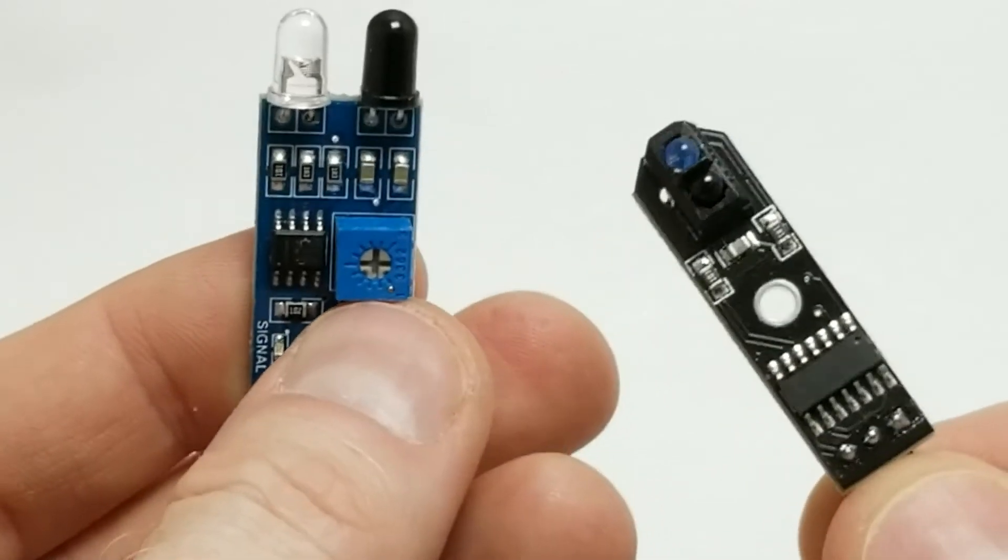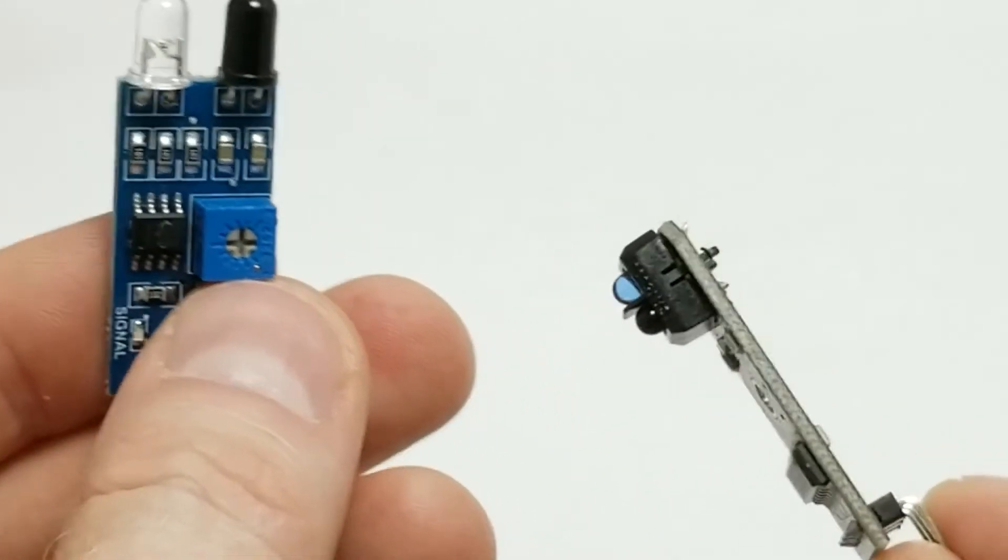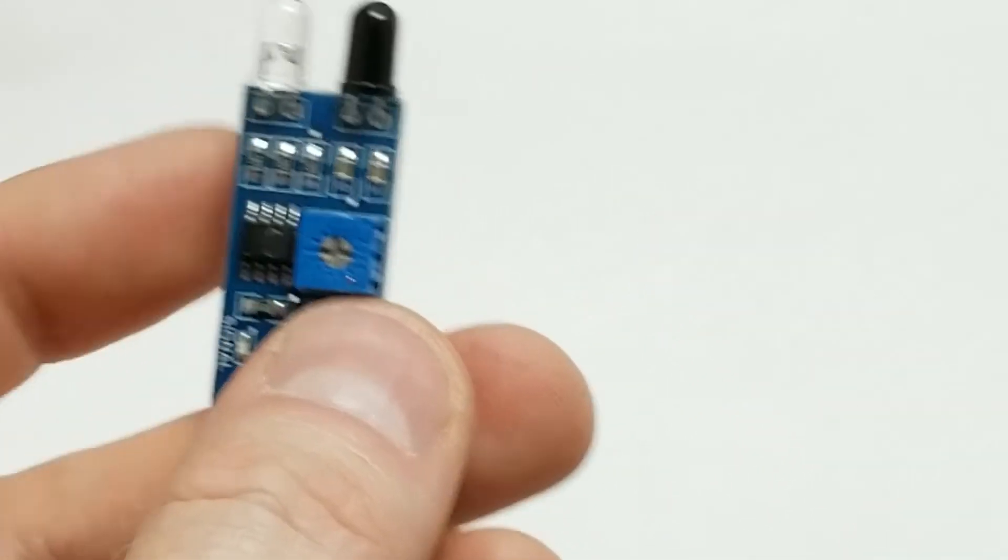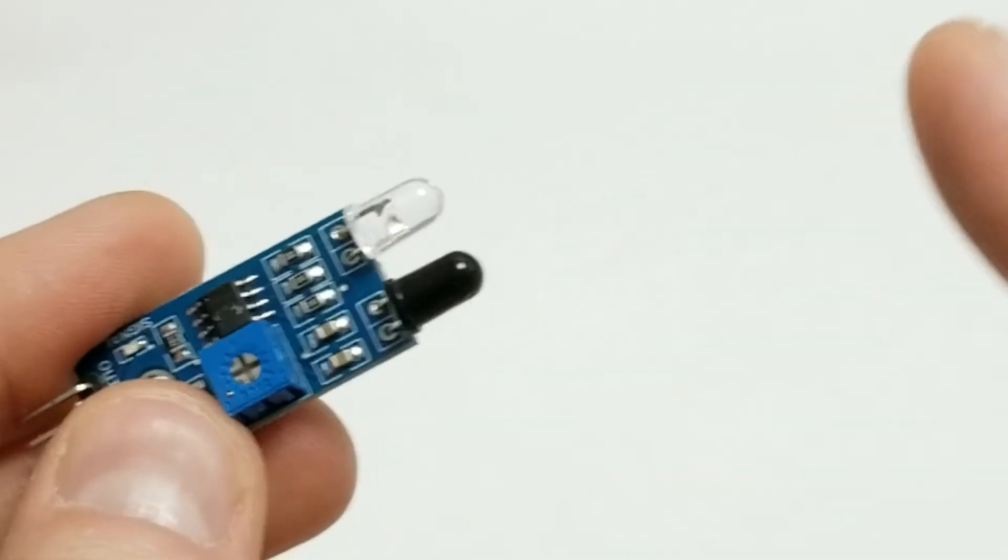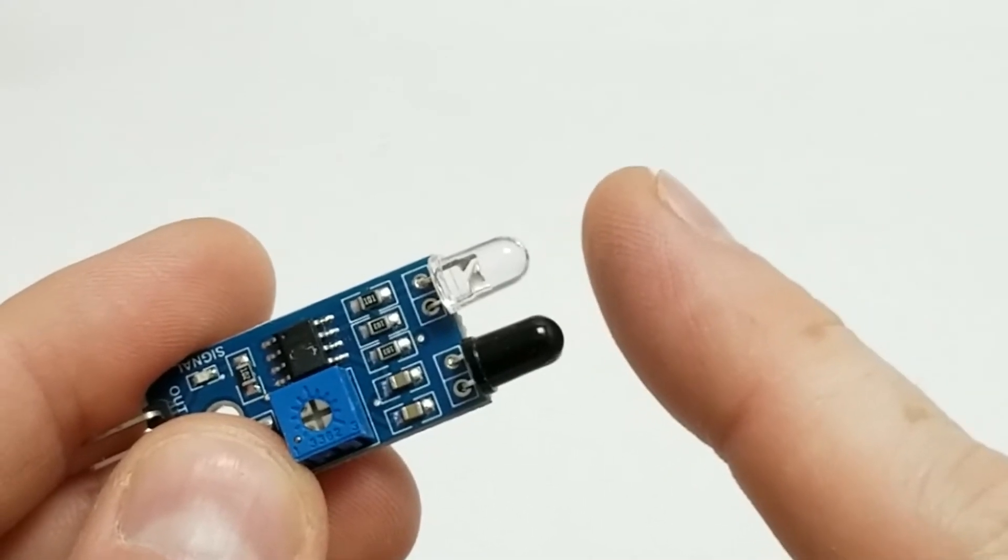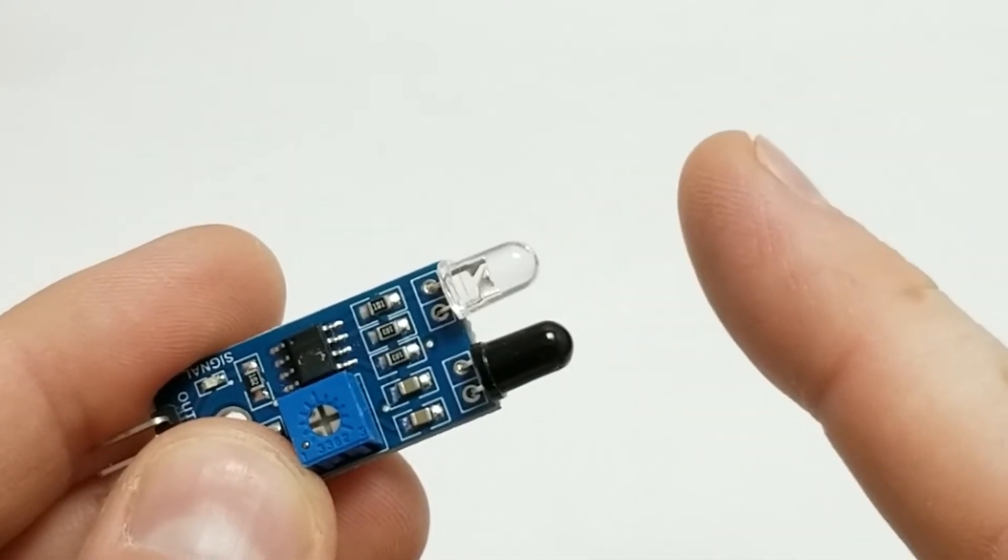This sensor on the right is pretty basic. It has a fixed detection distance, but you'll notice on some of these that there's a small potentiometer and this is used to adjust the distance at which the infrared sensor detects motion.